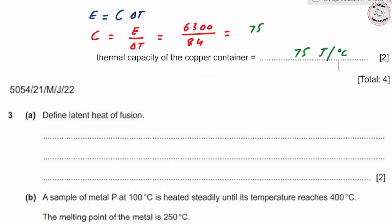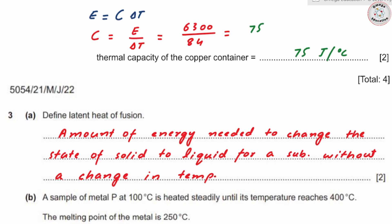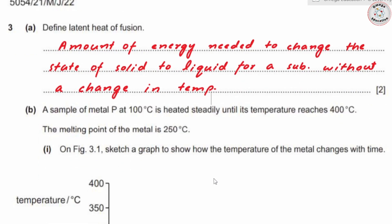Be careful: we calculated thermal capacity (latent heat of fusion), not specific latent heat of fusion. If it were specific latent heat of fusion, we would reference one kilogram and the unit would include 'per kilogram.' These are the terms proposed by Cambridge, so our answers should ideally be expressed using their terminology.